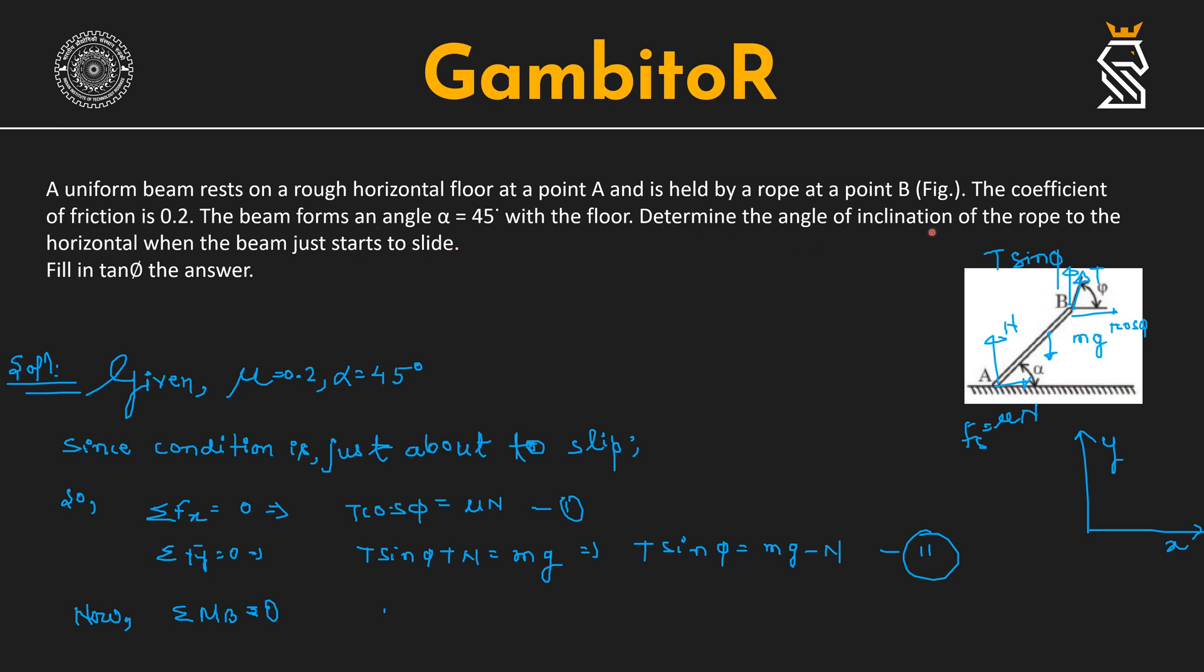Determine the angle of inclination of the rope to the horizontal when the beam just starts to slide. Fill in the answer. Basically we have a rod here, which is inclined at angle alpha with the horizontal floor.